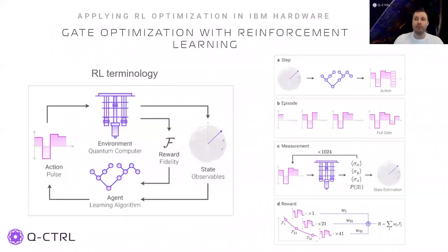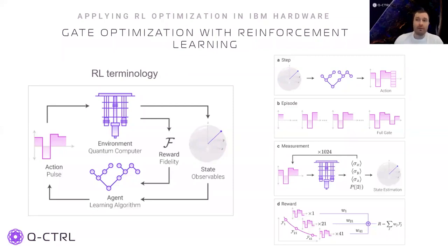Unlike many other black box methods, reinforcement learning also gathers intermediate information to build an internal model of the system. In each step, we use the most recent observation of the system to choose the next action — for example, two values for the amplitude and phase of the pulse in the next segment. An action can also cover several segments, and the number of segments per action is a hyperparameter of the model. We keep building the pulse step by step, collecting information about the state of the system after each step.